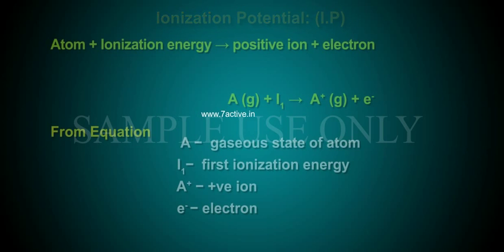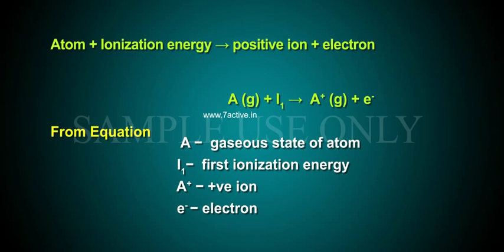Equation: Atom plus ionization energy gives rise to positive ion plus electron. A(g) + I₁ → A⁺(g) + e⁻. From equation: A = gaseous state of atom, I₁ = first ionization energy, A⁺ = positive ion, e⁻ = electron.